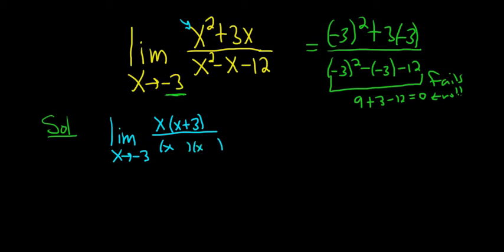So we need two numbers that multiply to negative 12 and add to negative 1. So I'm thinking negative 4 and plus 3. Yep, that works. And look at this. Hurrah! The x plus 3's cancel. So we get limit x approaches negative 3 of x over x minus 4.